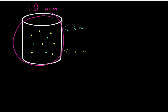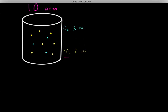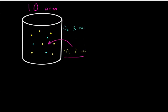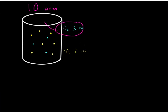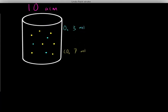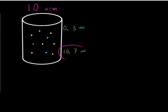Let's say we have a gas with 3 moles of oxygen molecules and 7 moles of carbon dioxide molecules. The total pressure in this gas is 10 atmospheres. You might wonder how many atmospheres of pressure does the oxygen contribute to this 10 atmospheres, and how many atmospheres does the carbon dioxide contribute?